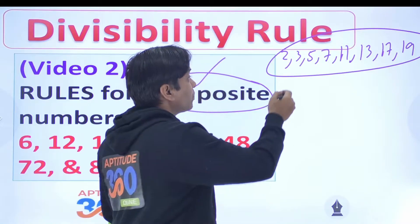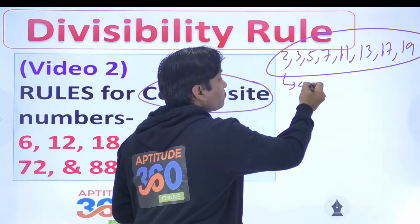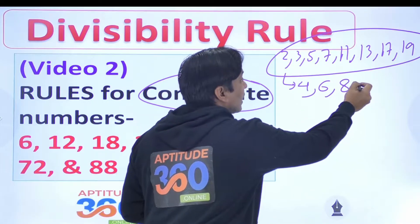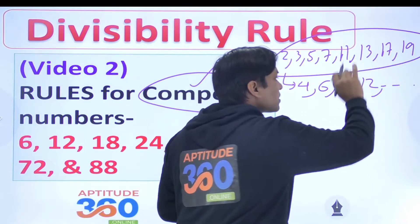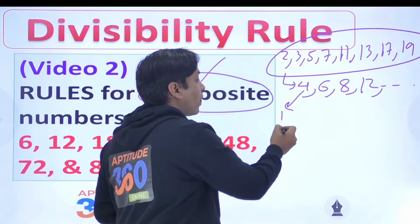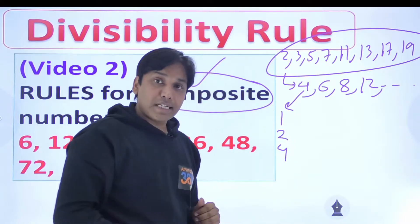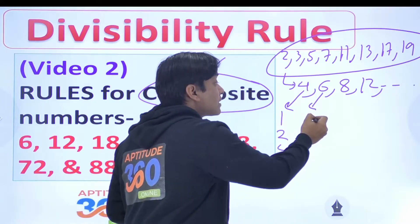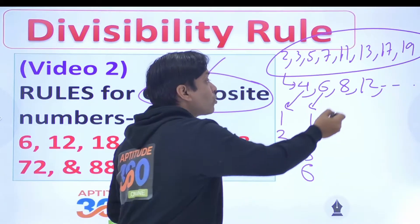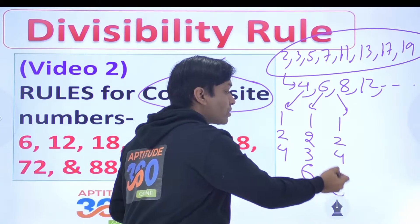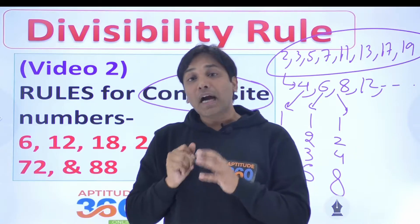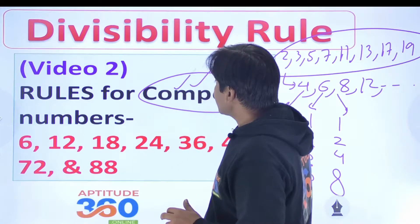Whereas the rest of the numbers — maybe 4, maybe 6, and then 8 and 12 — all the even numbers are nothing but composite numbers. So 4 is divisible by 1, 2, and 4. Whereas 6 gets divided by more numbers, and hence these numbers are considered to be composite numbers. That is the definition.